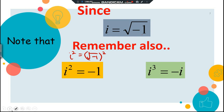So what will happen if we have i³? That is basically negative 1 times another i. i³ means i² times i. We already agreed that i² is negative 1, so negative 1 times i gives us negative i.